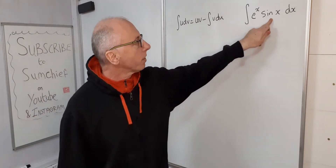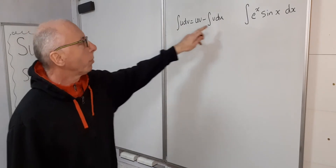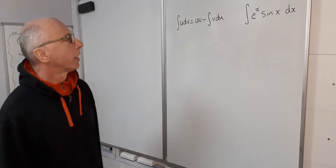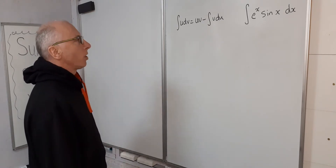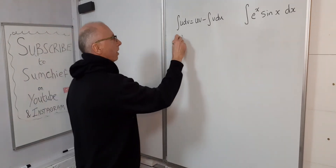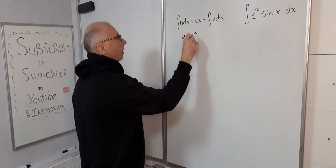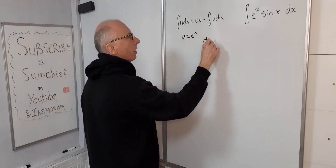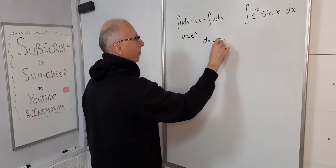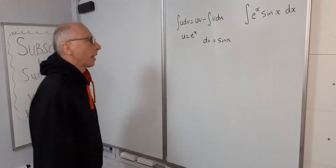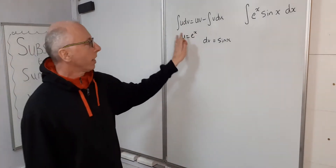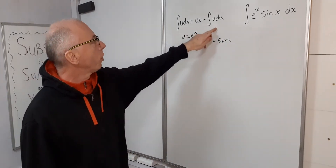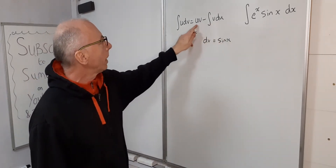We've got e^x times sine(x), so we're going to have to apply one of those to either u or dv. Let's set u equal to e^x and dv equal to sine(x). That takes care of the assignment — we've given each term a value, so now we can work out the different bits of the formula.